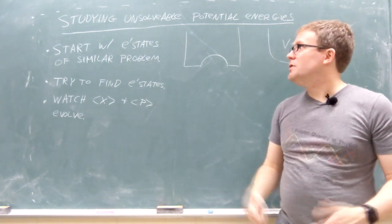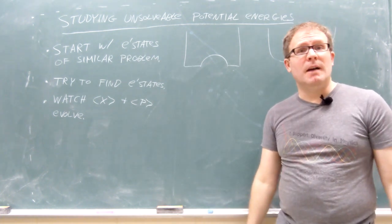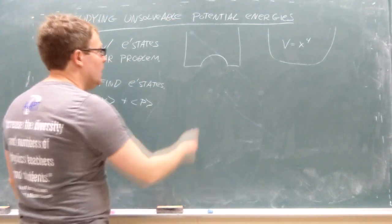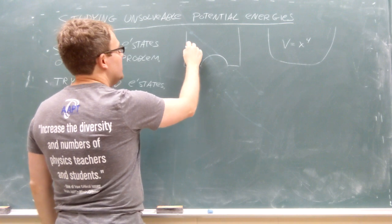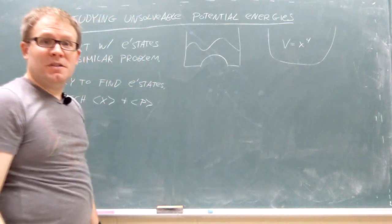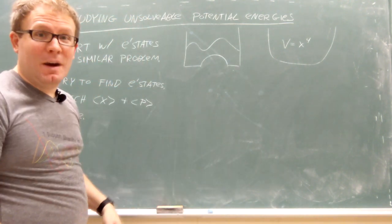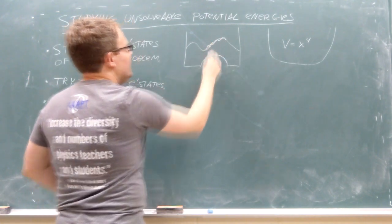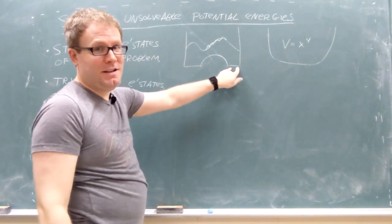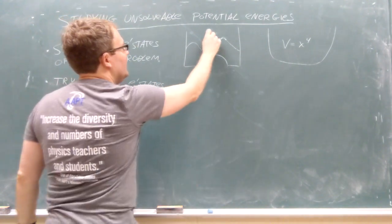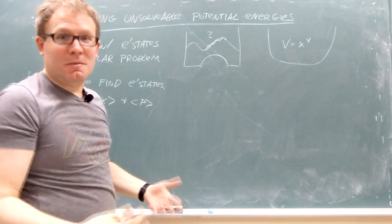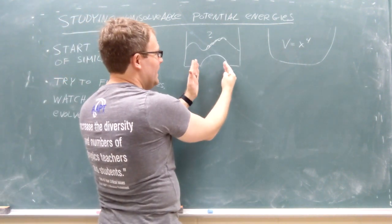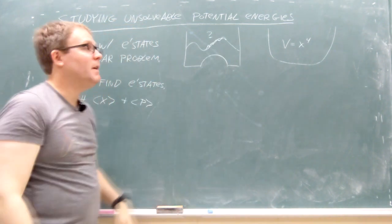What I want to highlight in this video are three ways you can start. At the very least, the first thing you do is you can start with eigenstates of a similar problem. For example, for this infinite square well with a bump, you can start with the infinite square well sine and cosines. You can start with those, time evolve it, and see what happens. See what influence this has in terms of messing things up. You might start with this thing being narrow and short and then eventually make it broader and taller.